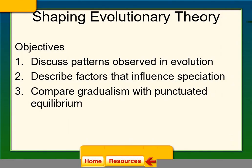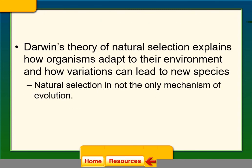Hello boys and girls, and welcome to our next lecture in evolution. Today we are going to be talking about shaping evolutionary theory. Our main objectives today are to discuss patterns observed in evolution, factors that influence speciation, and compare gradualism with punctuated equilibrium. Darwin's theory of natural selection explains how organisms adapt to their environment.